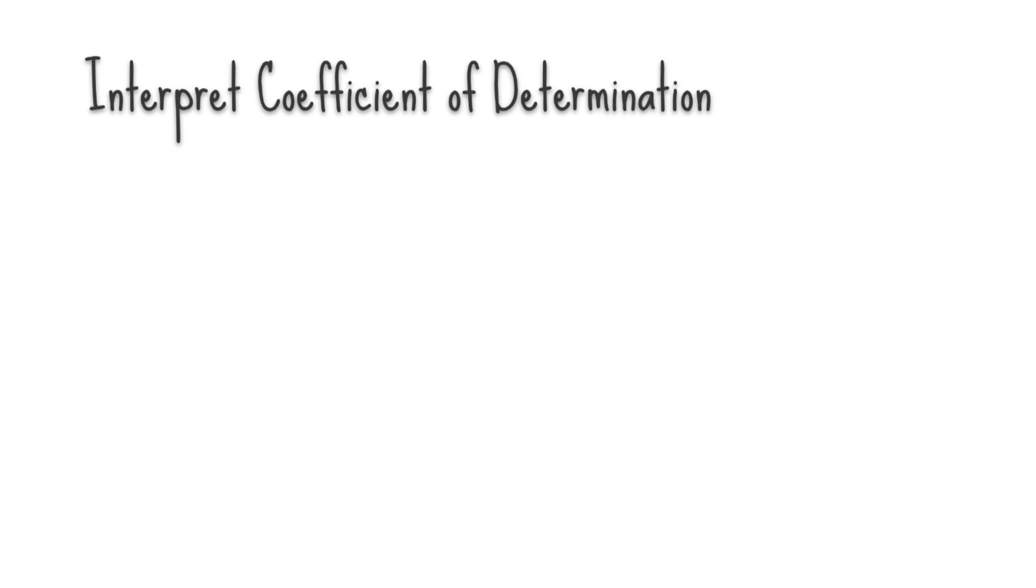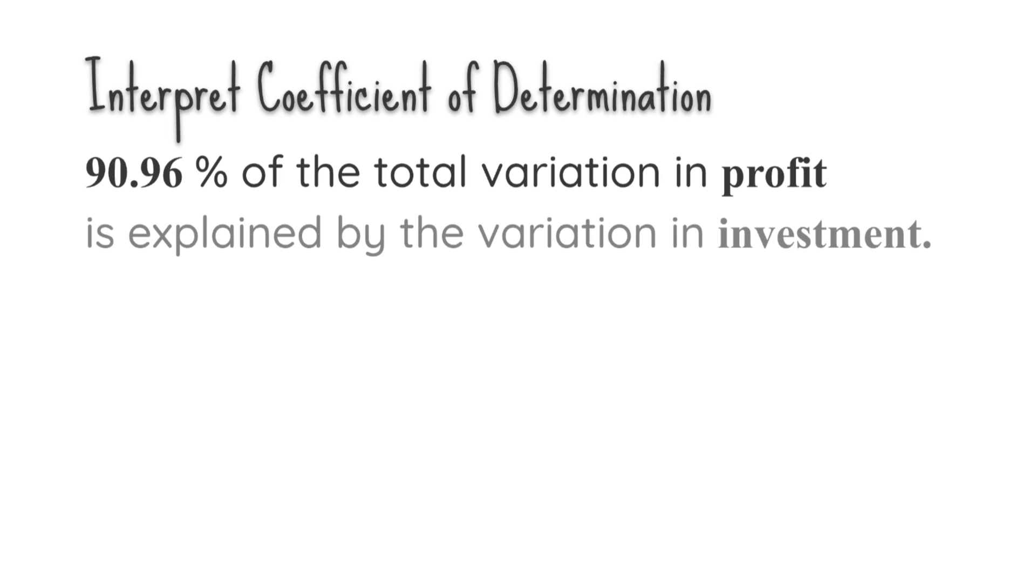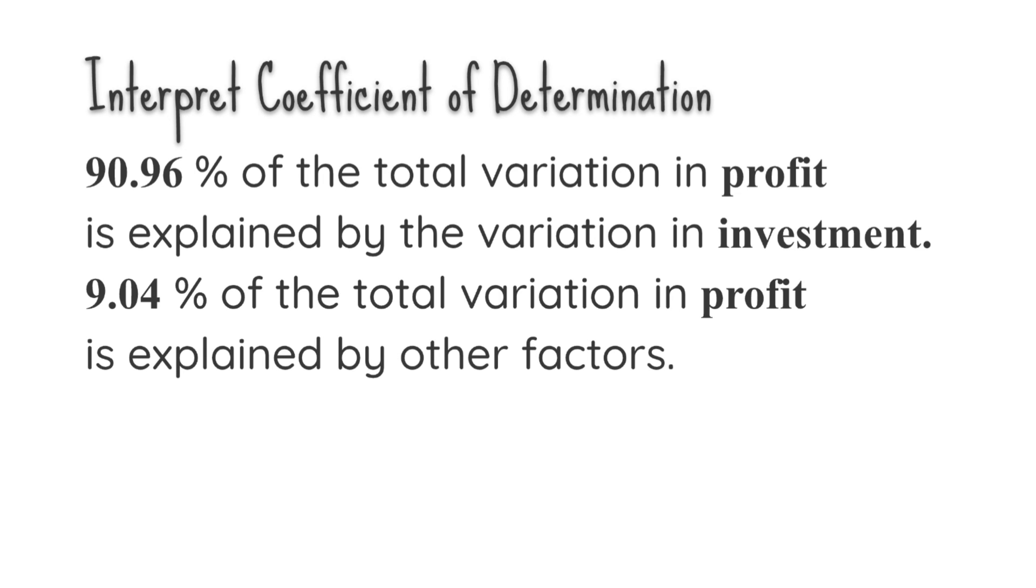Now, let's interpret coefficient of determination. 90.96% of the total variation in profit is explained by the variation in investment. 9.04% of the total variation in profit is explained by other factors.